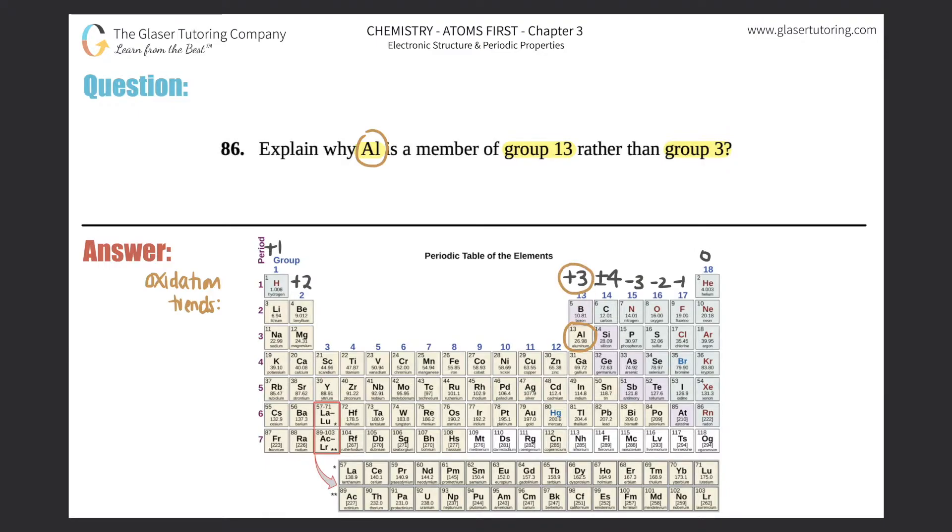Why is it in group 13 when it's a +3 charge, giving the assumption that it should be in group 3? Well, it is here.